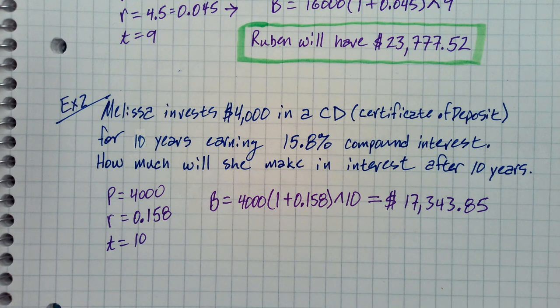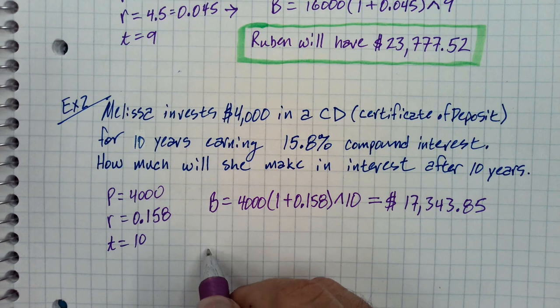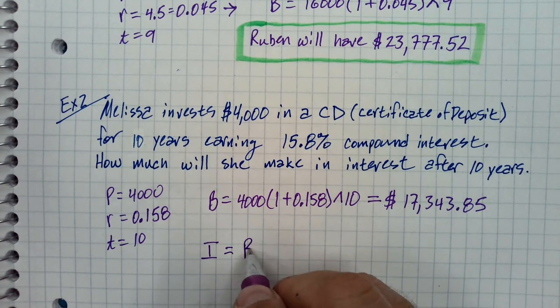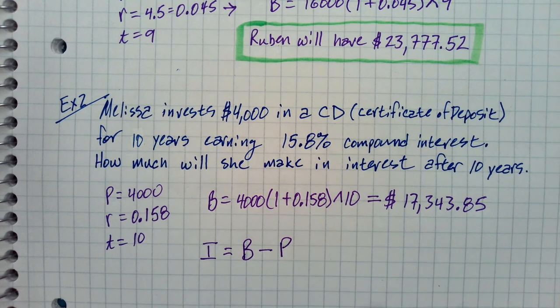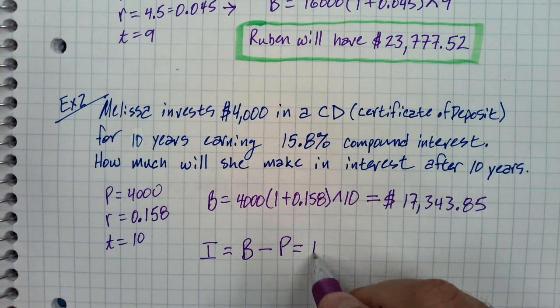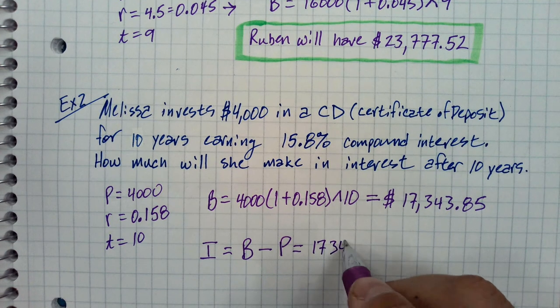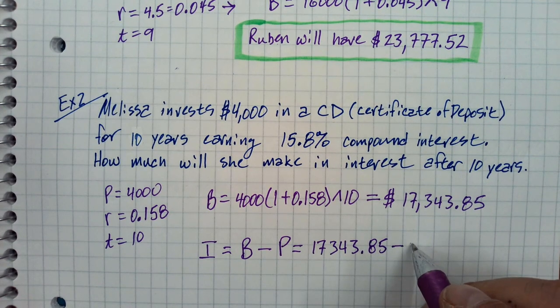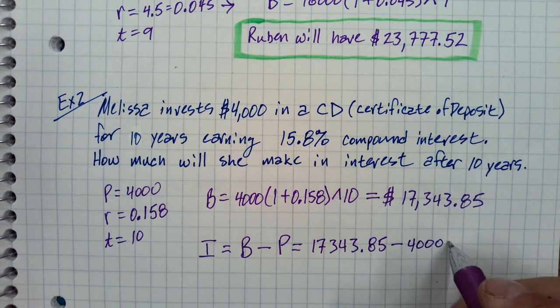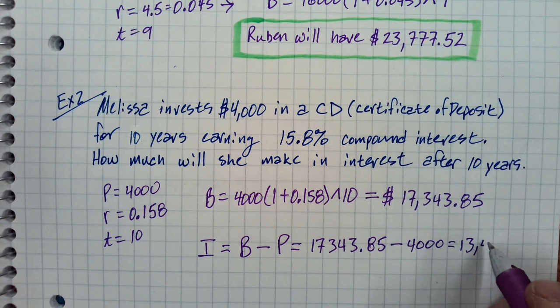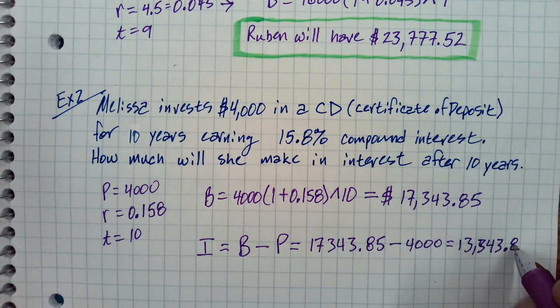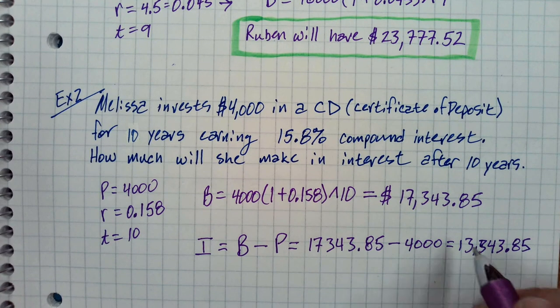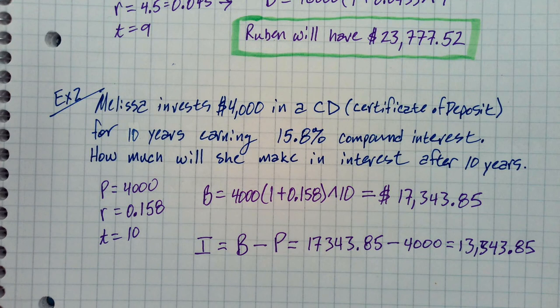How do we figure out the interest? How do we figure out how much she made just in interest? Subtract that by 4,000. So the interest is going to be the balance minus the principal. Take those $17,343.85 and subtract the original amount that she put in. So she made $13,343.85. She's earning back in interest way more than what she started with.